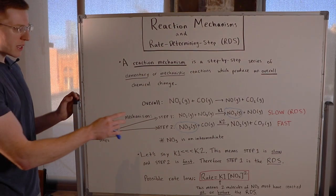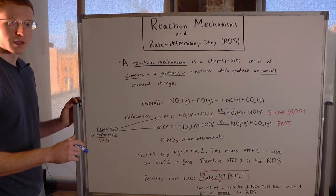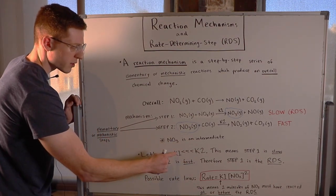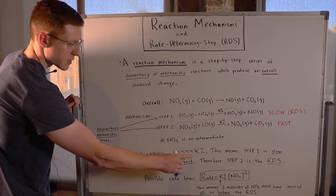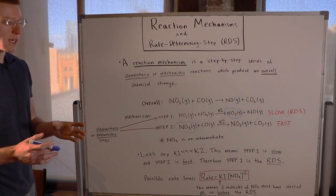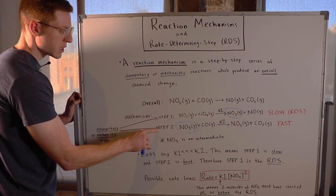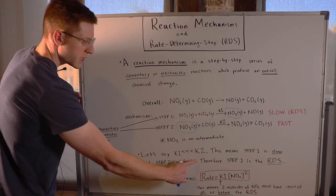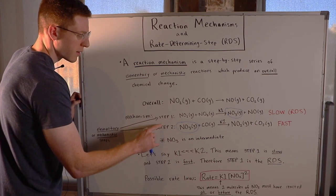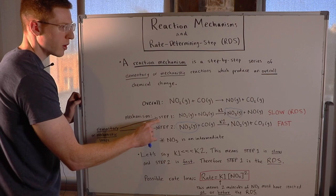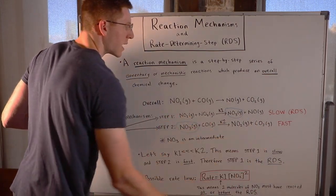Let's say for this mechanism K₁ is much smaller than K₂ — in other words K₂ is much bigger than K₁. We know that these rate constants K determine the rate of these reactions, and step 1 and step 2 are going to have their own individual rates. This says that step 1 happens much slower than step 2, so we can call step 1 our slow step and step 2 our fast step.